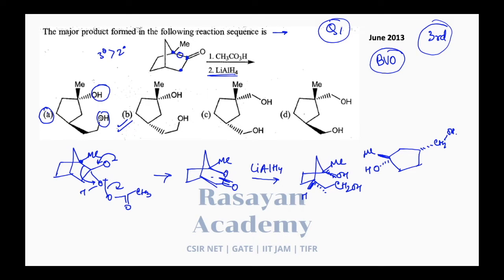Why is option A wrong? Because the OH and CH₂OH cannot be trans — they have formed the same ring. Options C and D are wrong because they come from the minor rearrangement product: if you rearrange the secondary carbon you would get option C, but we are migrating the tertiary carbon, not the secondary. Answer is option B. Baeyer-Villiger oxidation followed by lactone reduction.